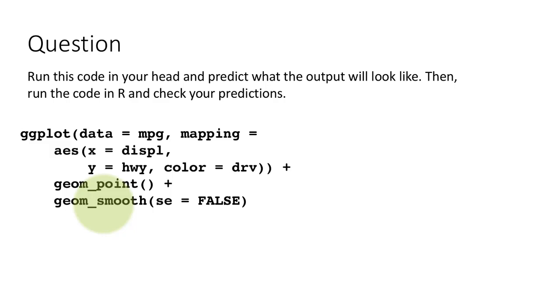Let's first look at the point geom. We're going to have one point for every point of the data set, no problem. And we have said color equals drive. That means every point will be colored depending upon the drive. So that's what the point layer is going to look like.